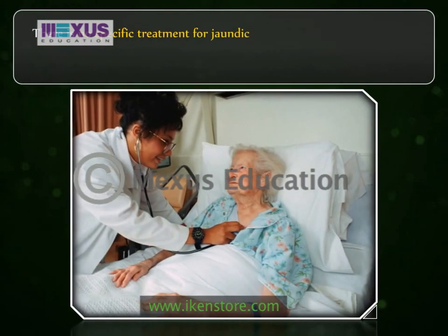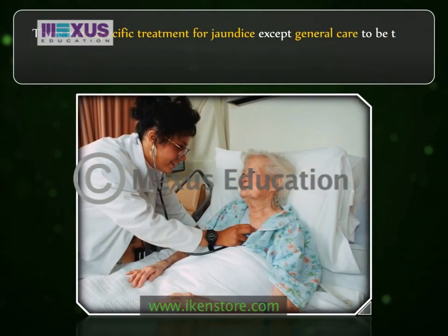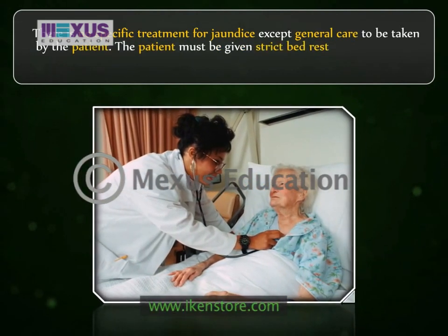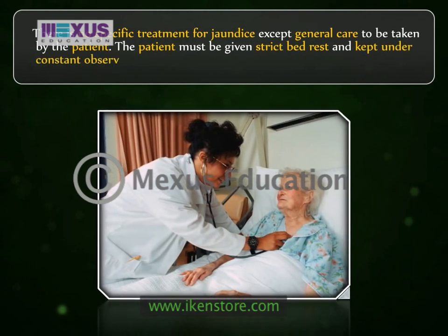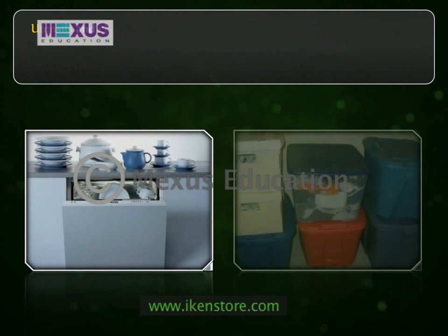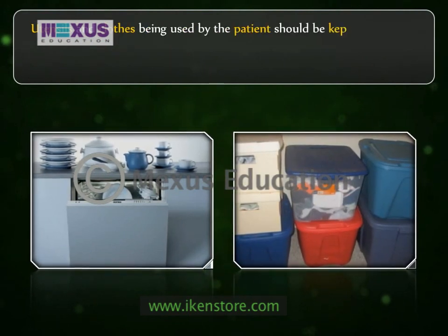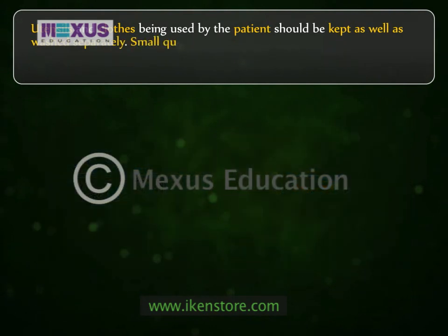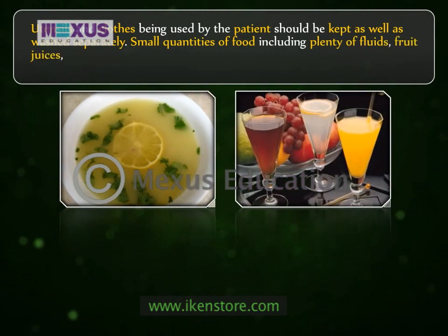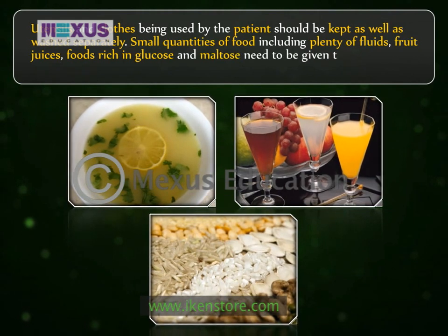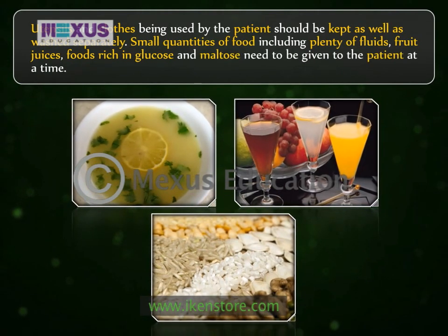There is no specific treatment for jaundice except general care to be taken by the patient. The patient must be given strict bed rest and kept under constant observation of the doctor. Utensils and clothes used by the patient should be kept and washed separately. Small quantities of food including plenty of fluids, fruit juices, and foods rich in glucose and maltose need to be given to the patient at a time.